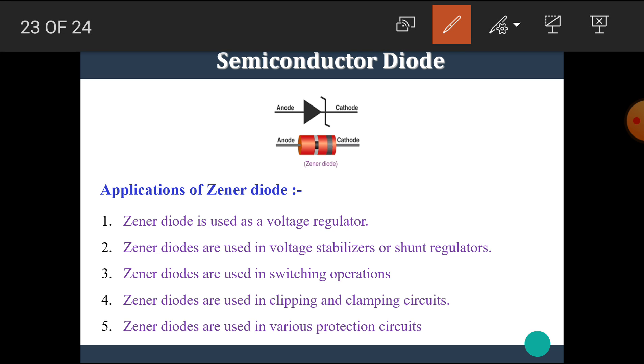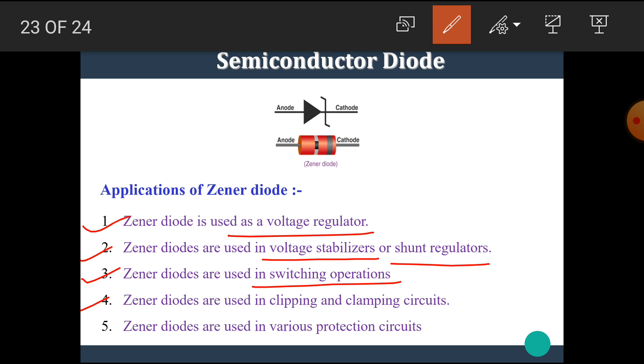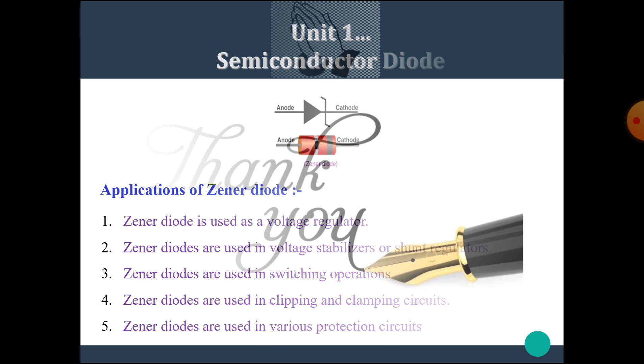Here are some applications of the Zener diode. The Zener diode is used as a voltage regulator; Zener diodes are used in voltage stabilizers or shunt regulators; Zener diodes are used in switching operations; Zener diodes are used in clipping and clamping circuits; and Zener diodes are used in various protection circuits. I hope you all understand the basic things about the Zener diode — the operation in forward and reverse bias mode, the breakdown mechanisms of avalanche and Zener breakdown, and the VI characteristics of the Zener diode.